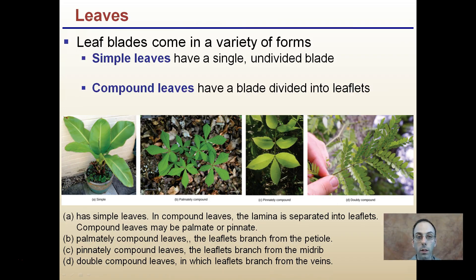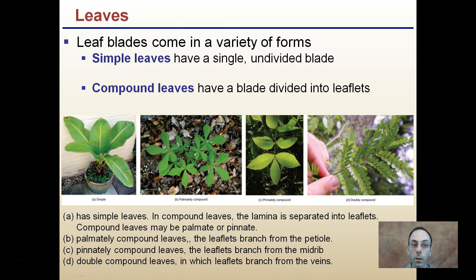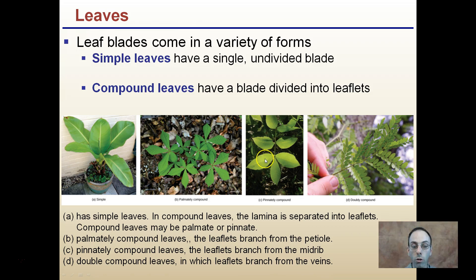Leaves can also be expressed as simple or compound. Simple leaves are a single undivided blade — like this banana tree. Compound leaves have a blade divided into leaflets. We see palmately compound leaves, where leaflets are divided in a palmate form, pinnately compound leaves with a strong midrib, and double compound leaves where you have a leaflet within a leaflet. These can also be helpful for identification of certain species.